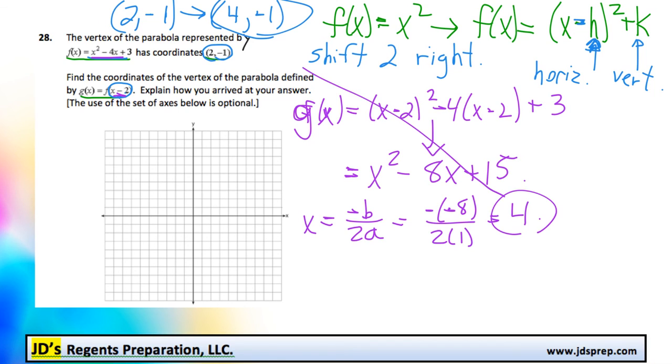And that ends up getting us an x value of 4. See how this is similar? And then from there, we can get our y value by taking g of x here and replacing x with 4. So, we would do 4 squared minus 8 times 4 plus 15.